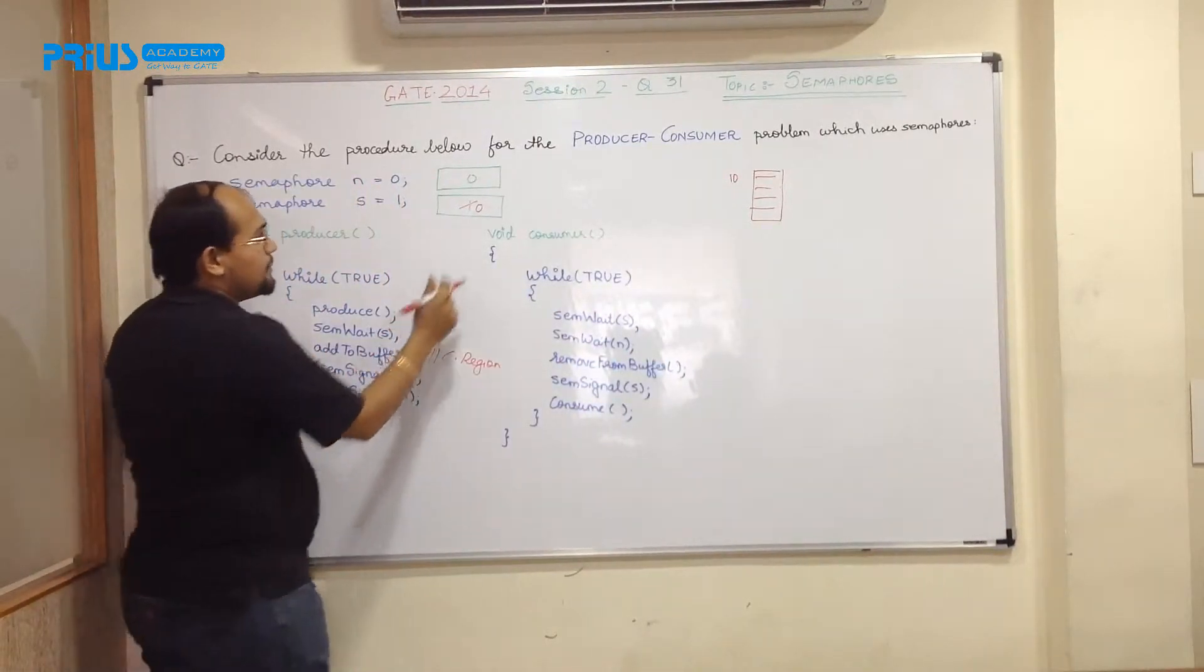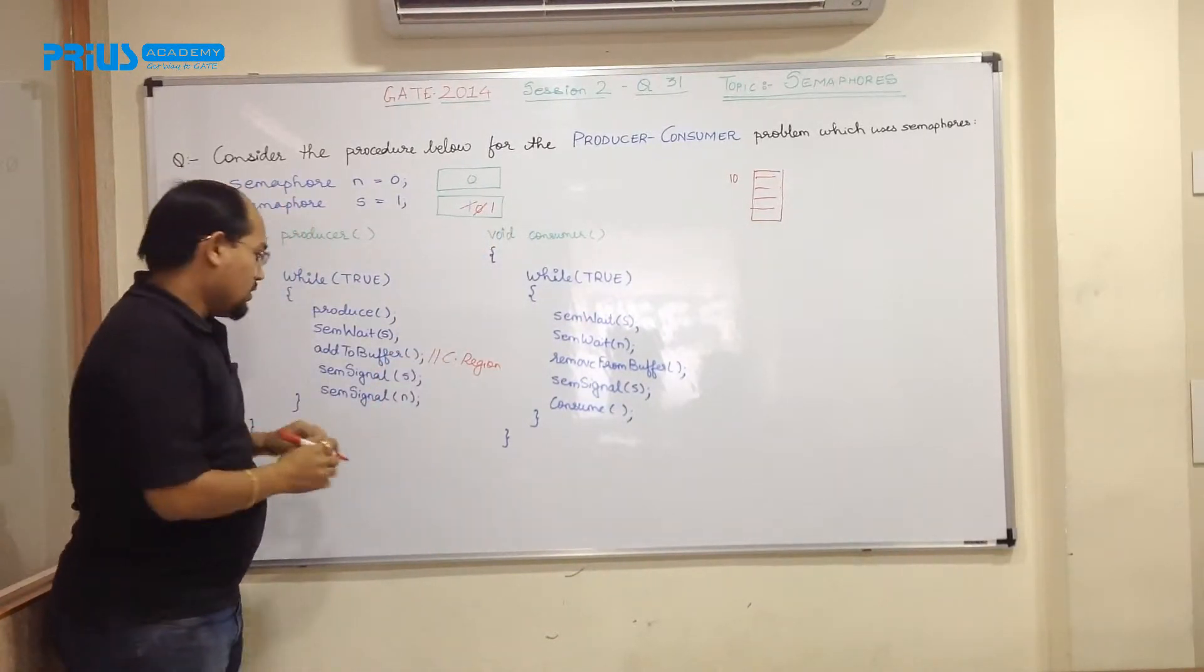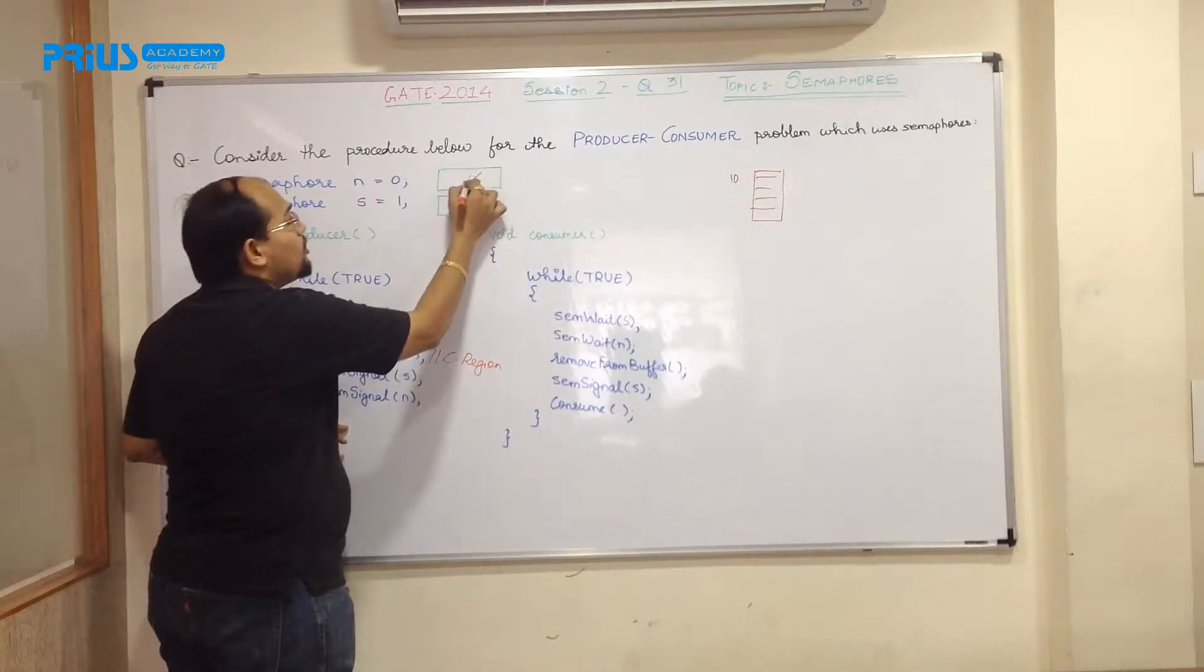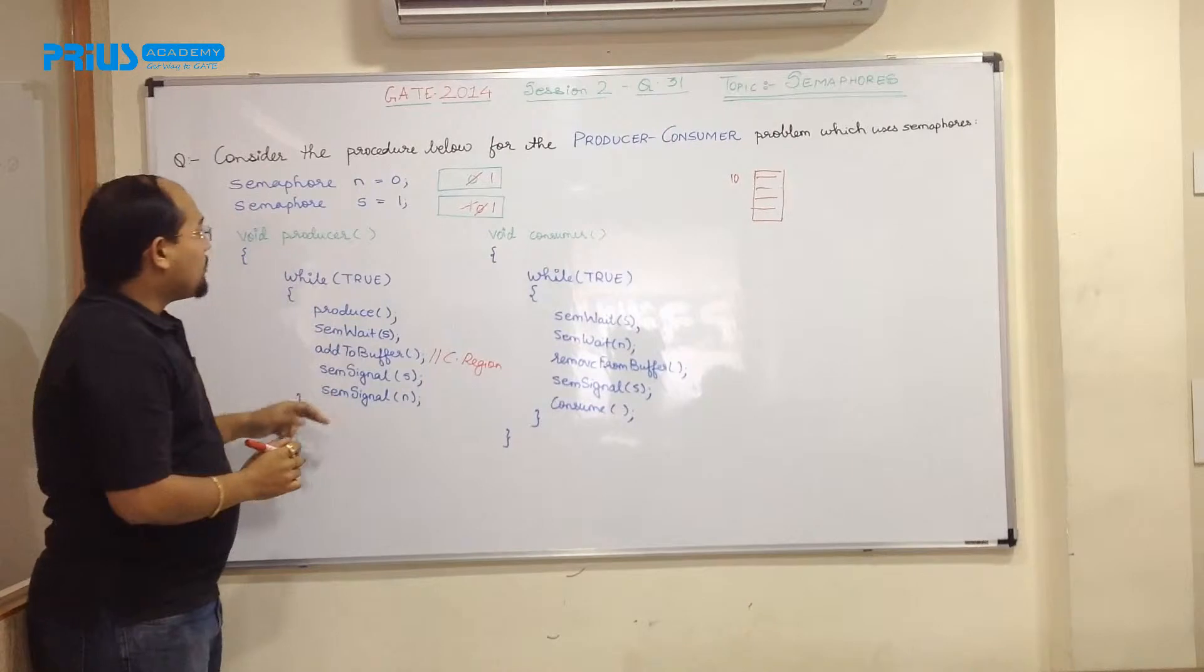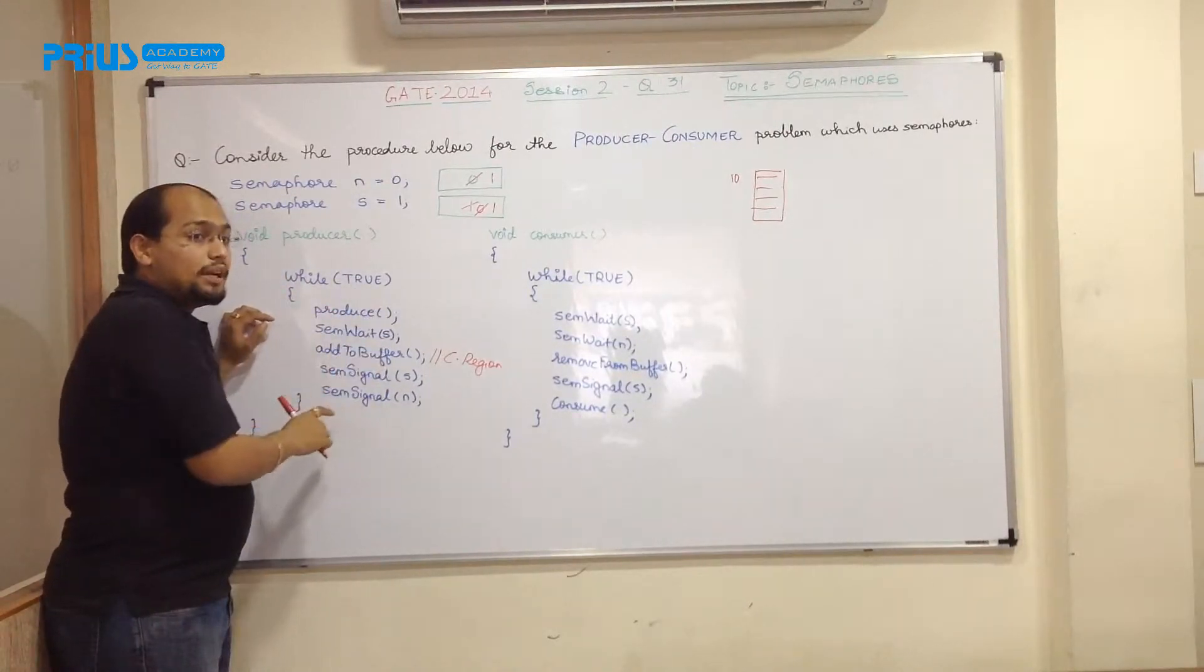After that, it is semaphore signal S. That means this value is now again incremented to 1. So what will happen at semaphore signal N? It will again increment the value of 0 to 1. So this is how a producer will work and again a while true. That means this process will keep on repeating.